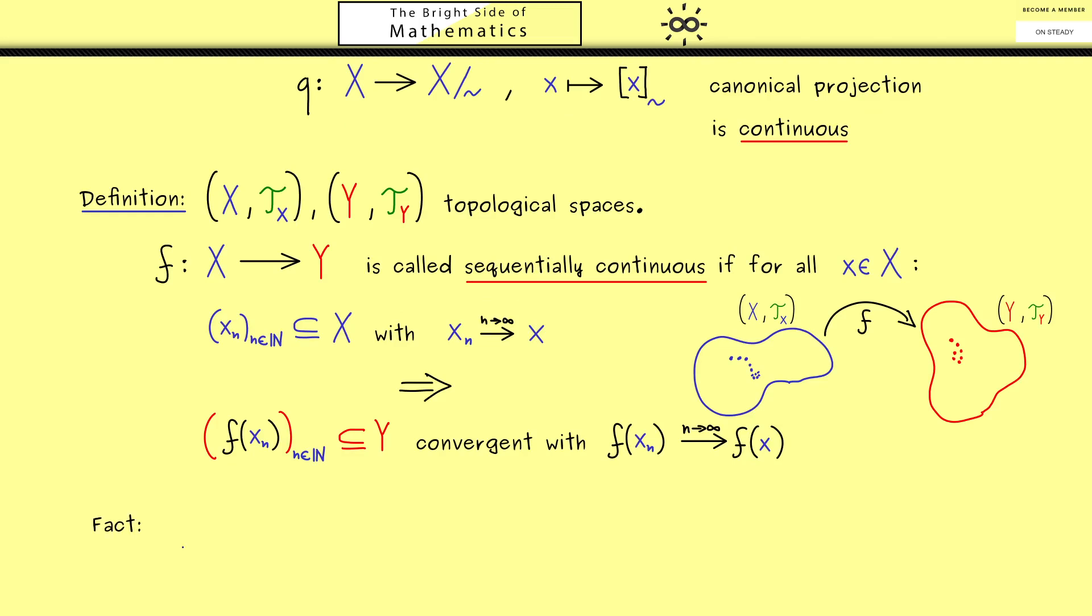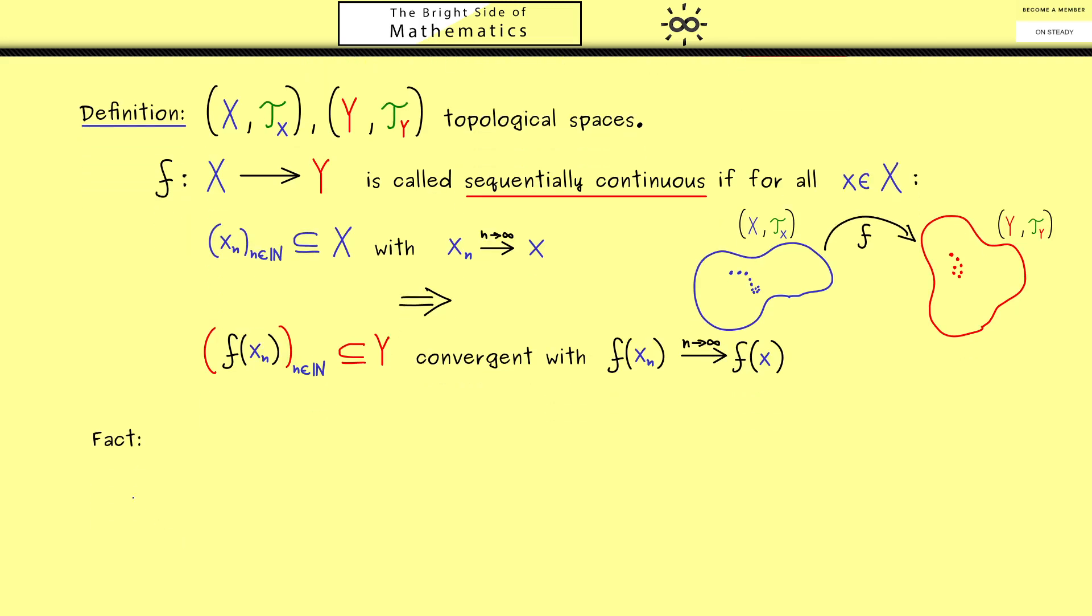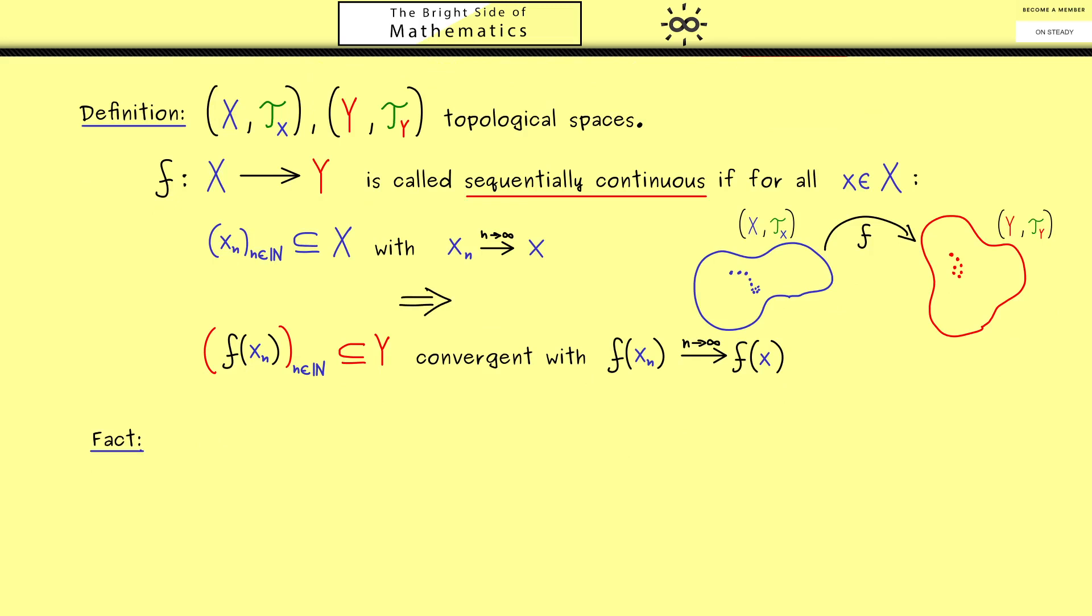So we have the fact that in general we have two continuity definitions. On the one hand the map f could be a continuous map, and on the other hand f could be a sequentially continuous map. However, the good thing is now being continuous is the stronger property. So we have this implication.